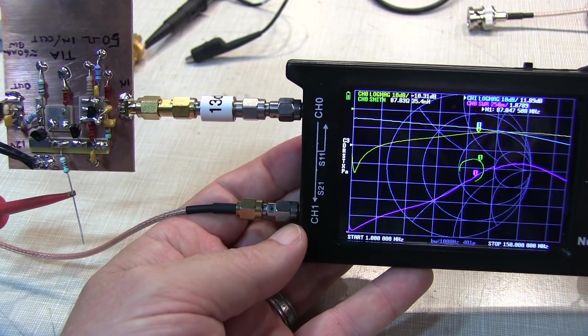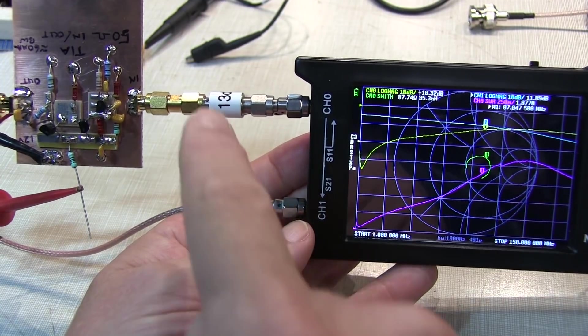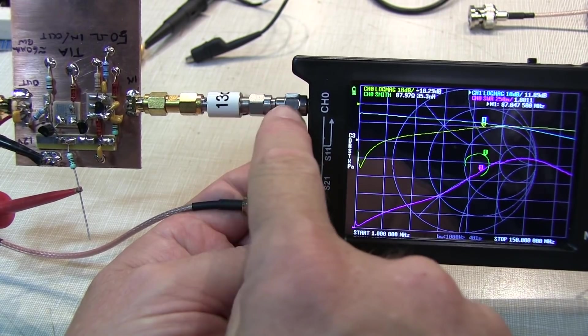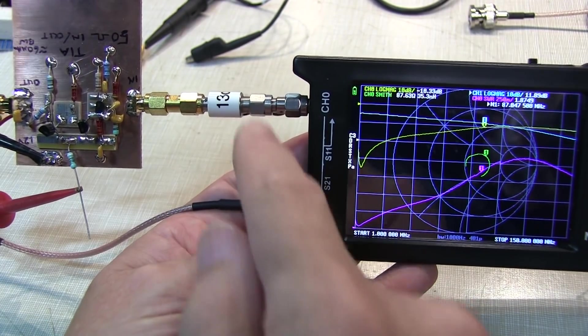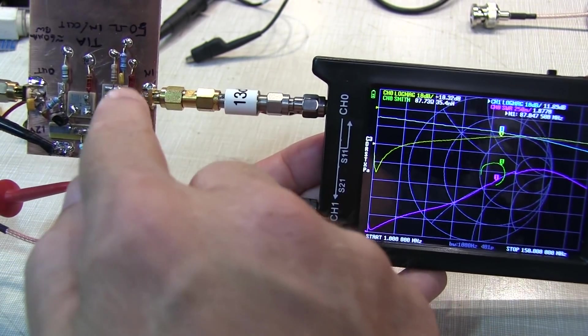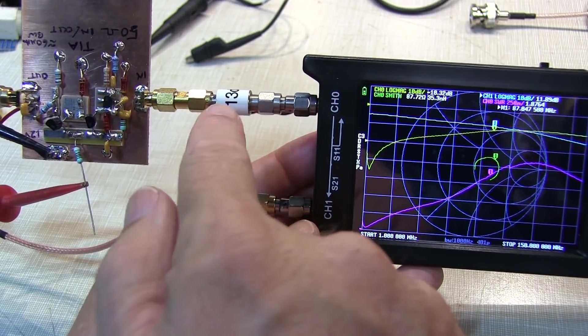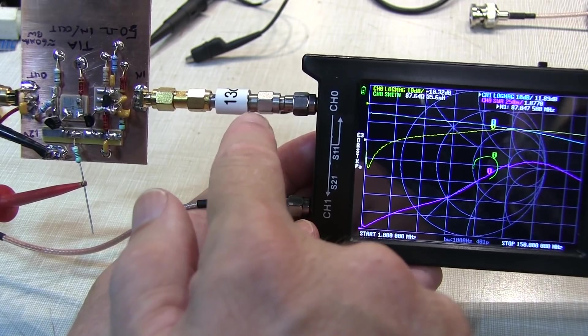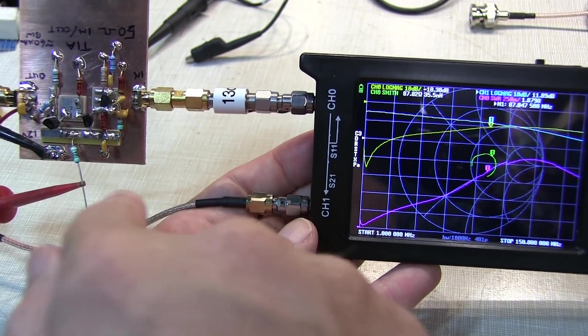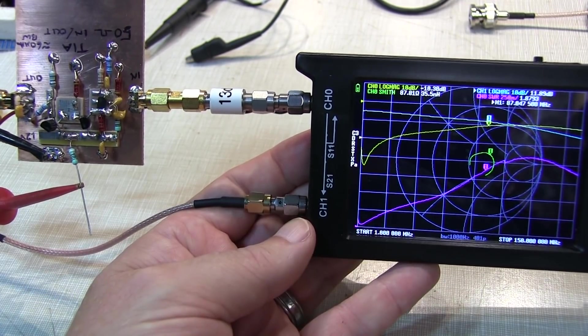So I hope this video has helped to show you why you've got to worry about sometimes the output amplitude of the NanoVNA and adjust it accordingly to meet the input signal requirements of the device you're testing, and then how that attenuator can also help to compensate for the gain in the amplifier when measuring something like S21 or the gain.